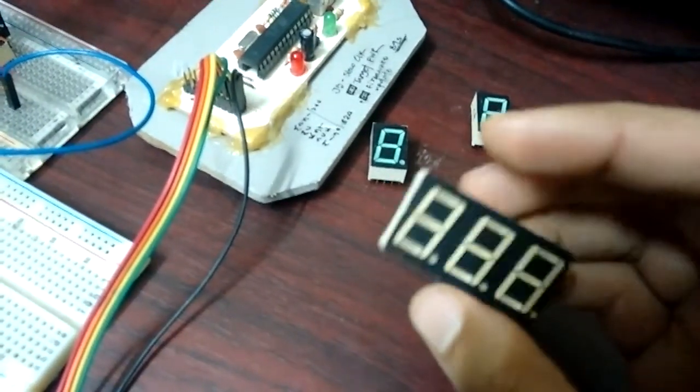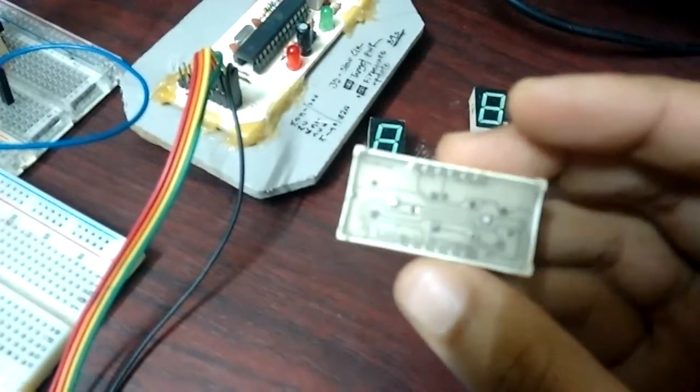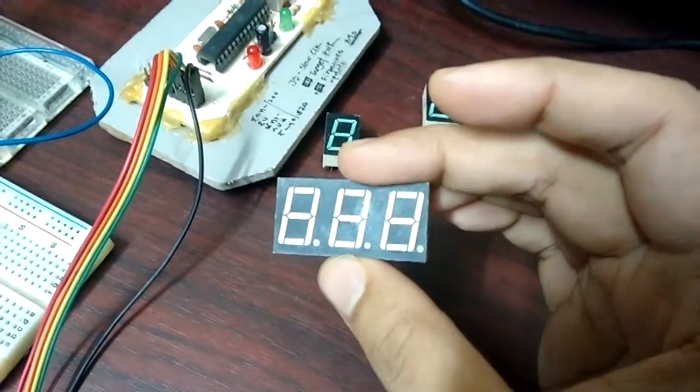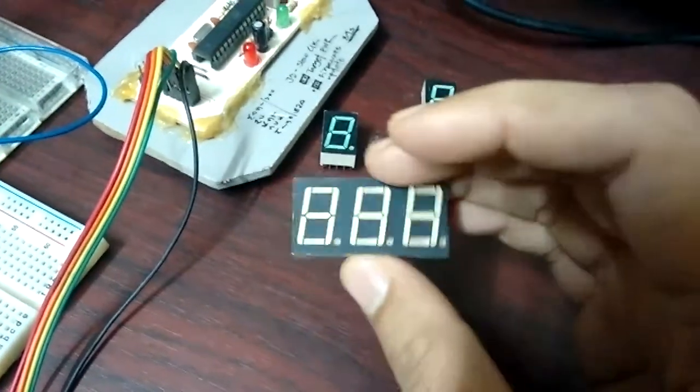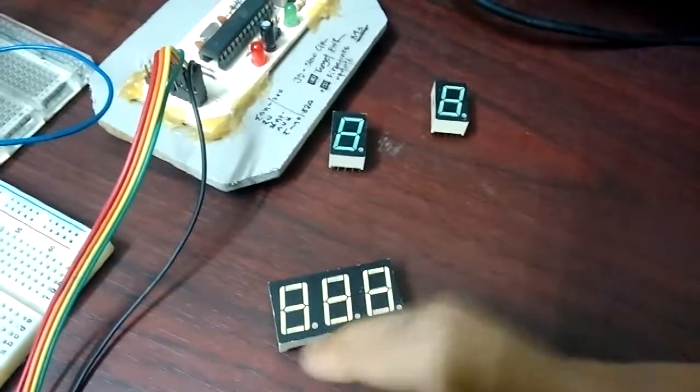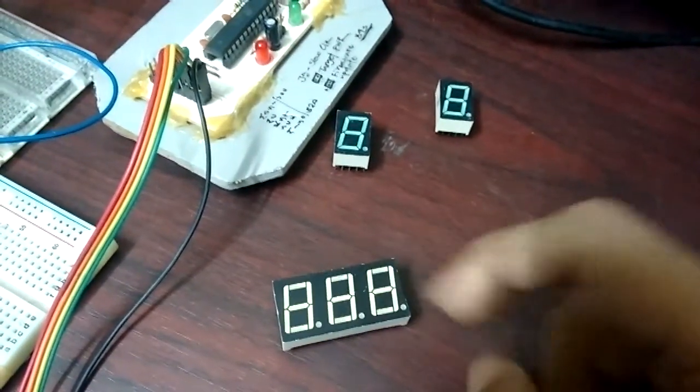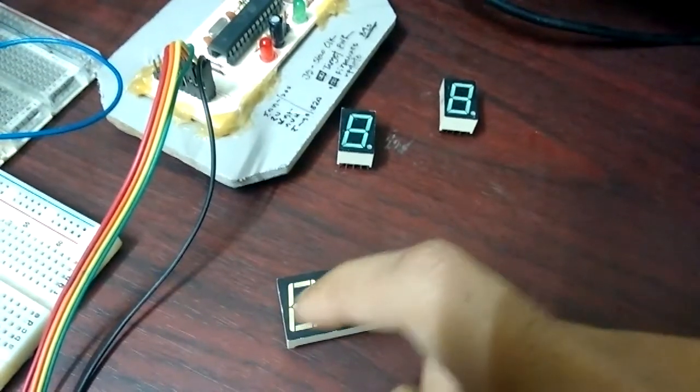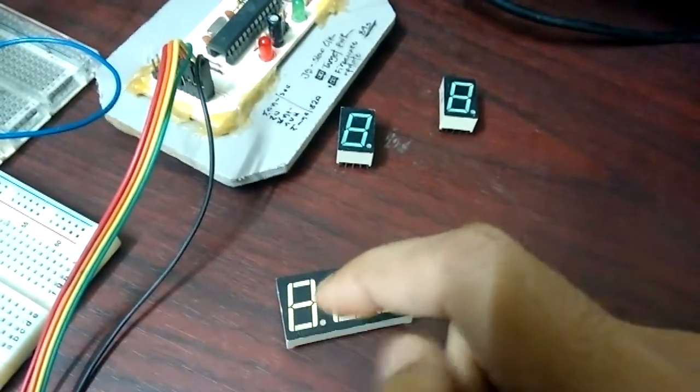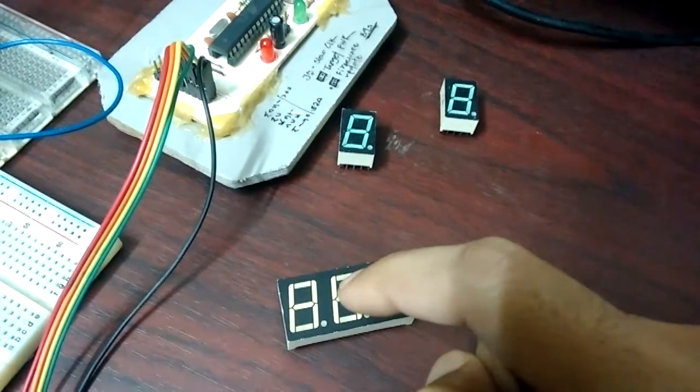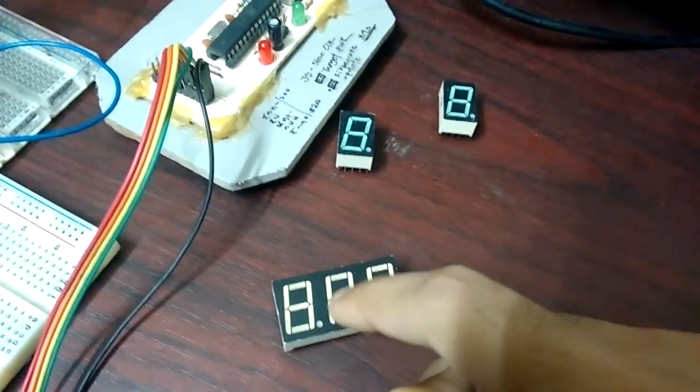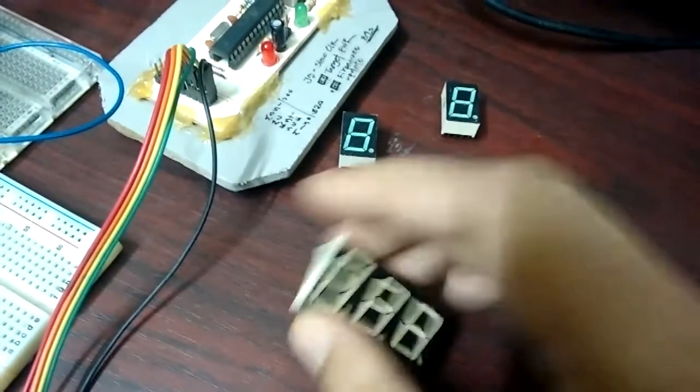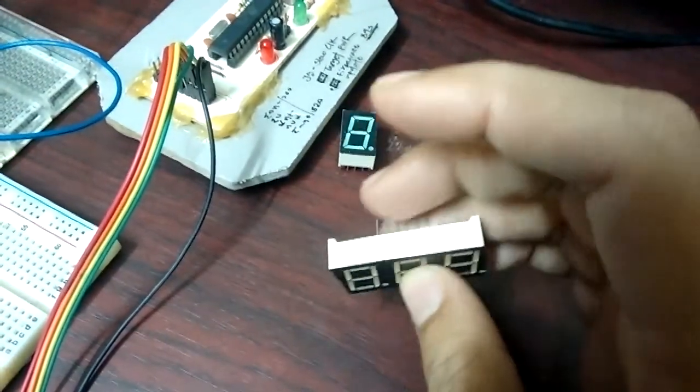There are internally connected, so all the A to G segments of all three digits are interconnected. So let's say the A segment of this digit is also connected with this digit's A segment and also this one. The A pin is just brought out as one.